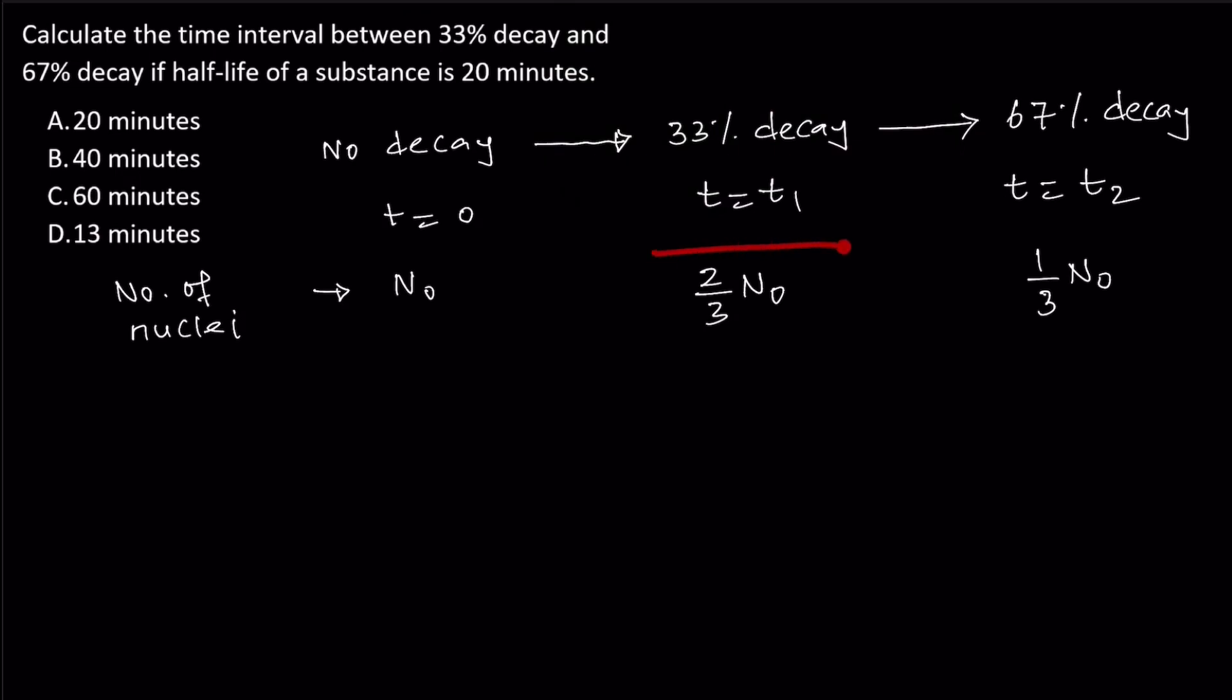At time t₁ we have two-thirds, and at time t₂ we have one-third. You can see that exactly half of the nuclei present at t₁ are present at t₂. This time difference must equal one half-life, because we have exactly half of what was present at t₁.